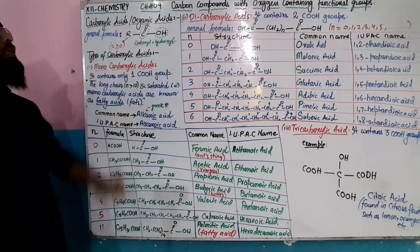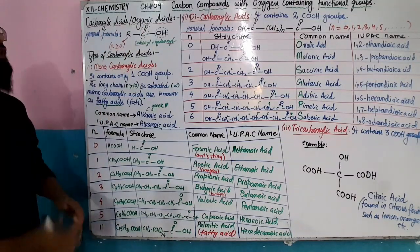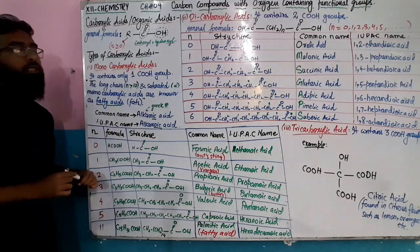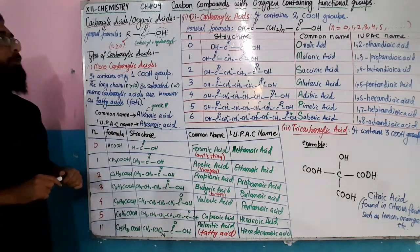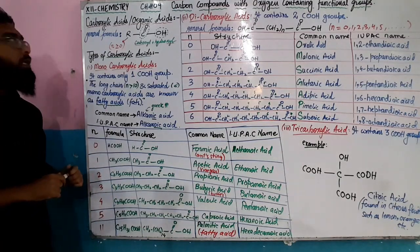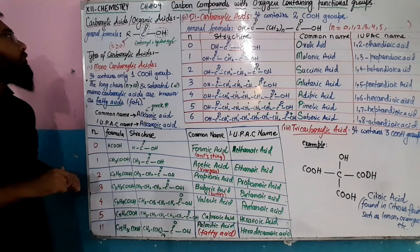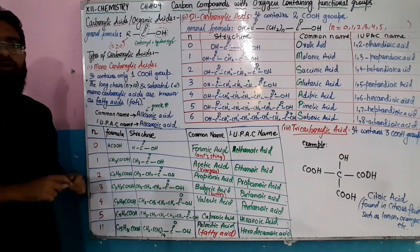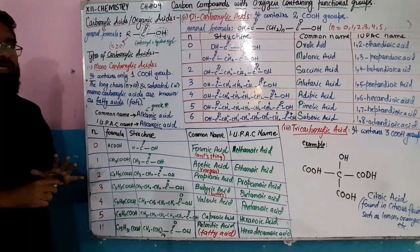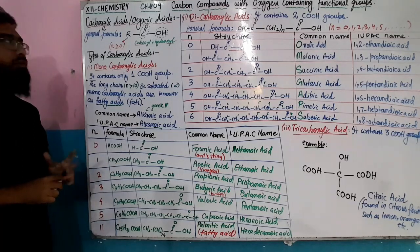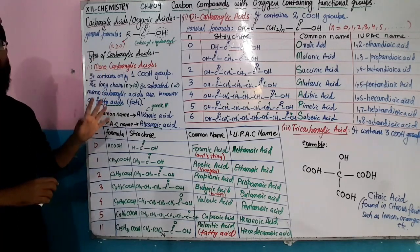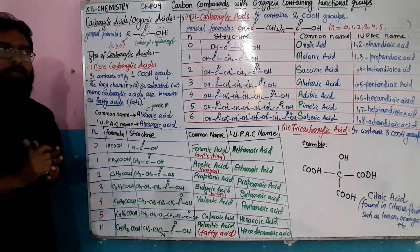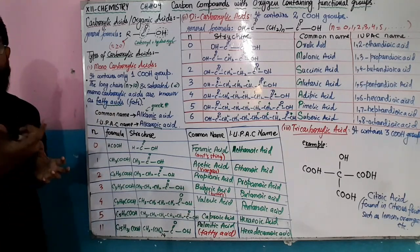In secondary chemistry, chapter 9 on carbon compounds with oxygen-containing functional groups, in the last class we discussed ketones, including the most famous ketone compound, acetone or propanone. Today I'm going to discuss carboxylic acid. The introduction of carboxylic acid is a very descriptive topic, so today we will cover the basics.